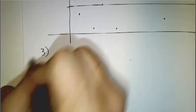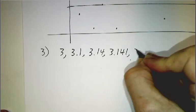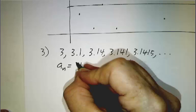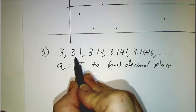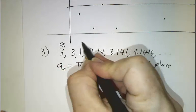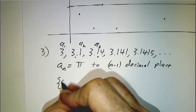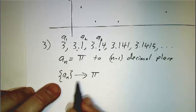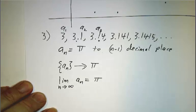On the other hand, we could take the sequence 3, 3.1, 3.14, 3.141, 3.1415, etc., where a_n is pi to n−1 decimal places. So a1 is 3, a2 is pi to one decimal place, a3 is pi to two decimal places. These numbers are getting closer and closer to pi — they converge to pi. One notation says the sequence converges to pi; another is: the limit as n approaches infinity of a_n equals pi. They mean the exact same thing.